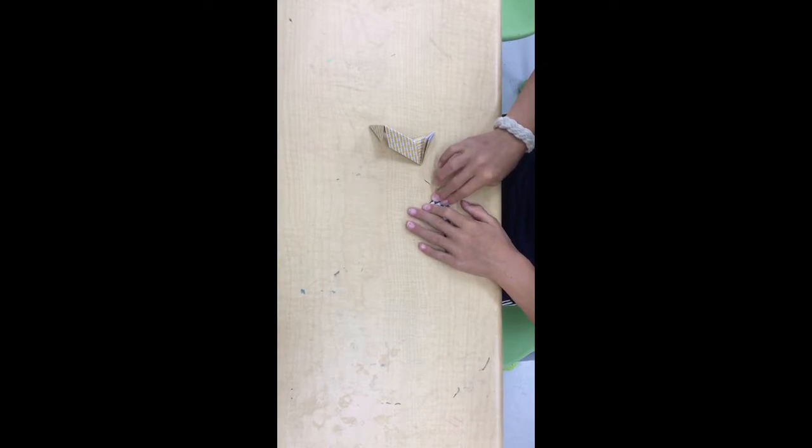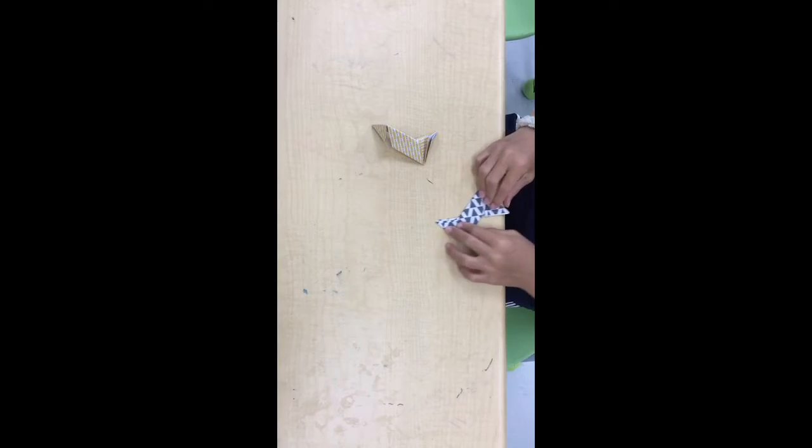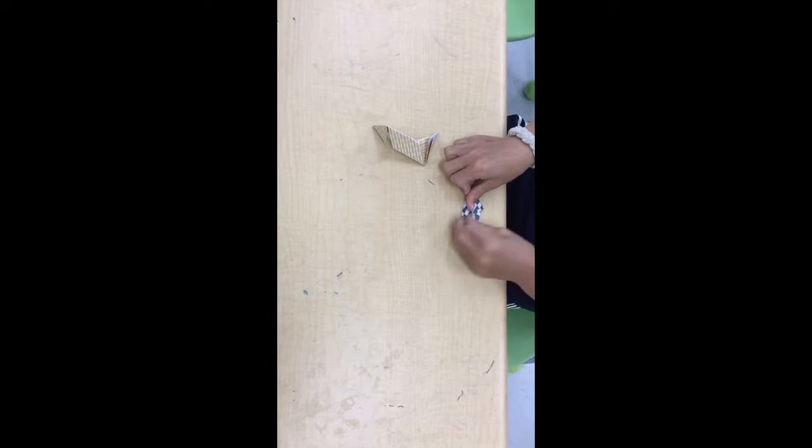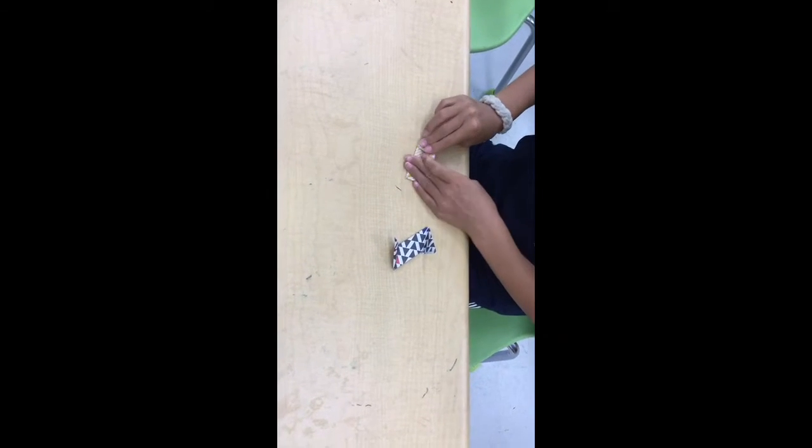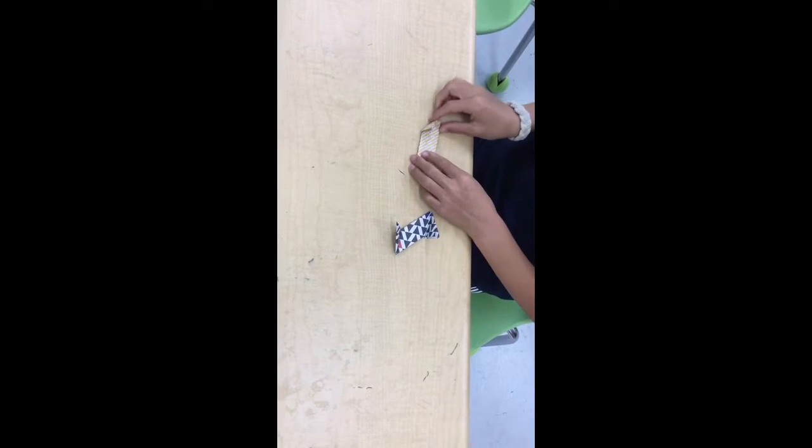So once you've done that, you're going to then fold both just to the middle just to make it a diamond fold. So once you get to the last part, it will fold easily. Then do the same to the other.